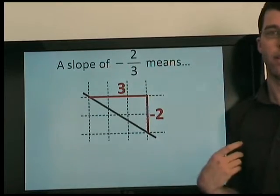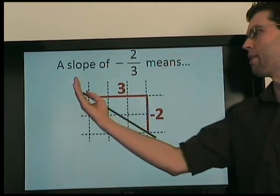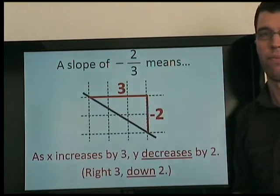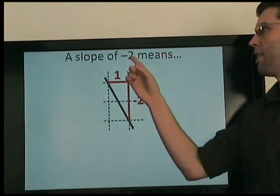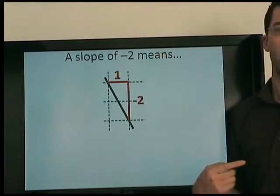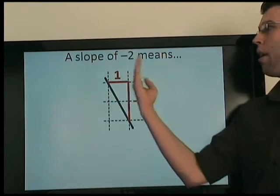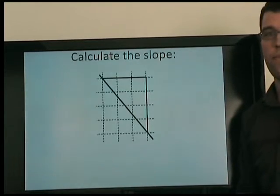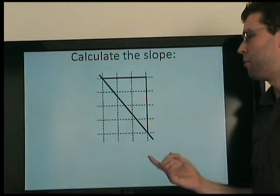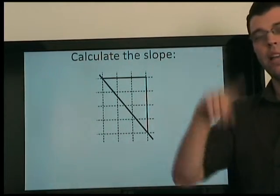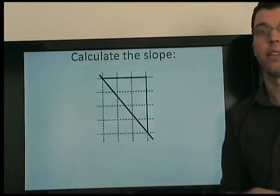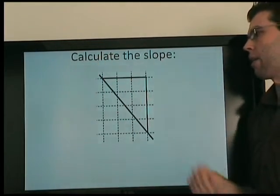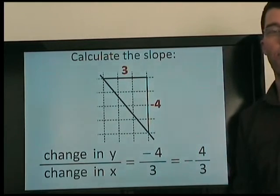So what does the slope of negative 2 thirds mean? Well, it means as x increases by 3, y decreases by 2. A slope of negative 2 — well, that's the same as negative 2 over 1 — so as x increases by 1, y decreases by 2. Let's calculate this slope. Just like before, we count the change in y and count the change in x and divide. Here, y is decreasing by 4 as x increases by 3, so the slope of this line is negative 4 thirds.